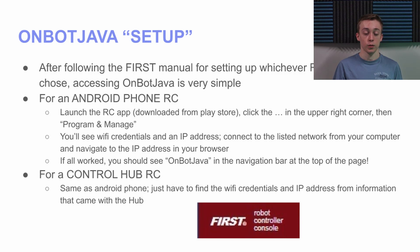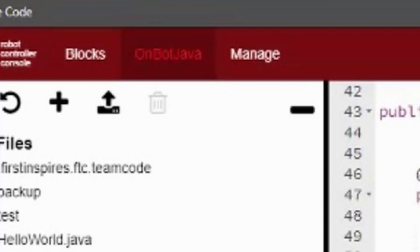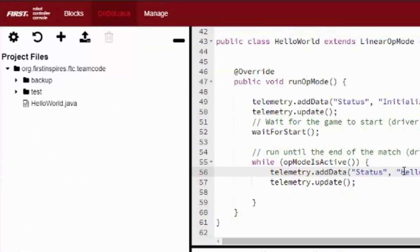For OnBot Java, there's no real setup — here's just how to access it. Whether you're using a Control Hub or an Android phone, there will be an IP address. The control hub or phone hosts a server, and once you connect to its Wi-Fi Direct network, you simply navigate to that IP address. You'll have the whole console there, click on the OnBot Java tab, and you'll be ready to go.